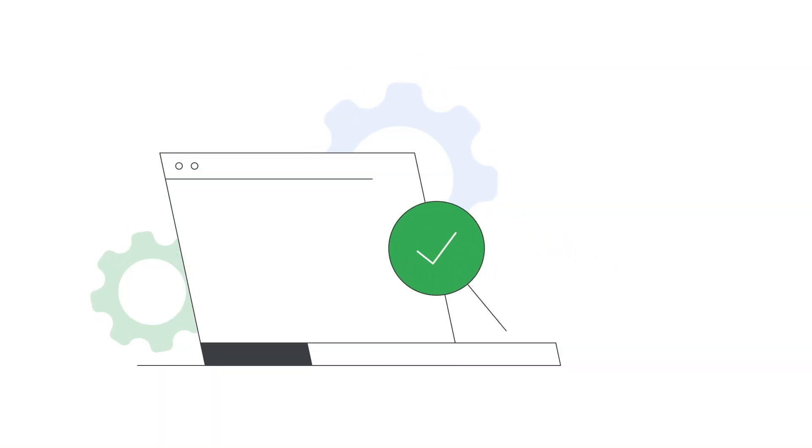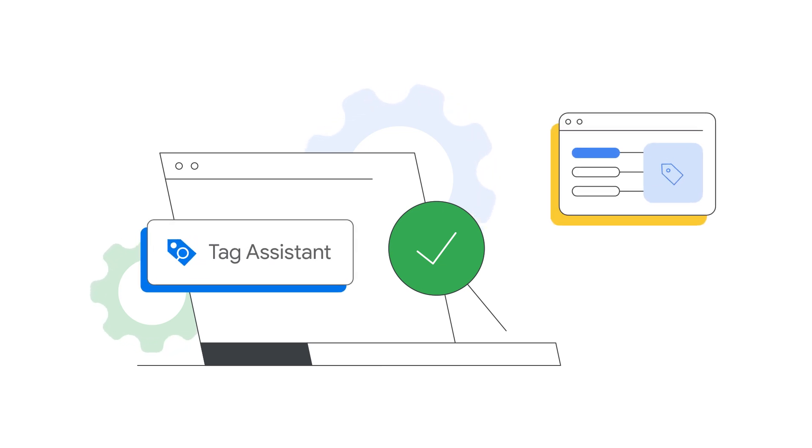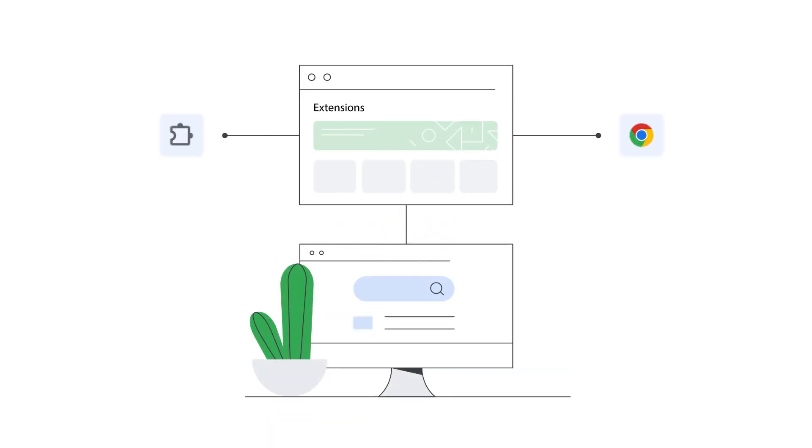Tag Assistant lets you troubleshoot and verify the implementation of tags on your website by navigating through your website and seeing which events and data are collected by those tags. Before we get started, we recommend installing the Tag Assistant companion extension for Chrome, which lets you debug in the same browser window so you can switch between your website and Tag Assistant. You can find a link to the tool in the video description.